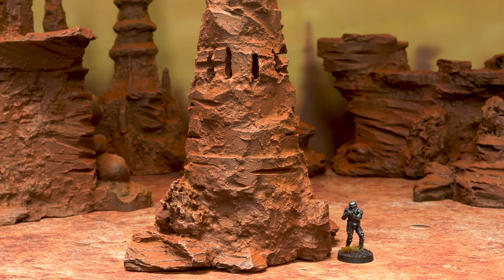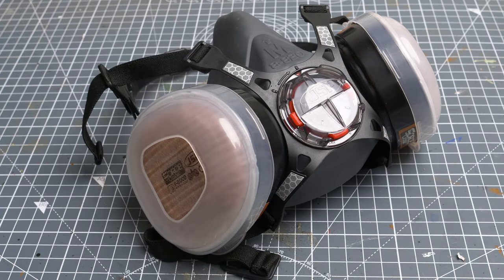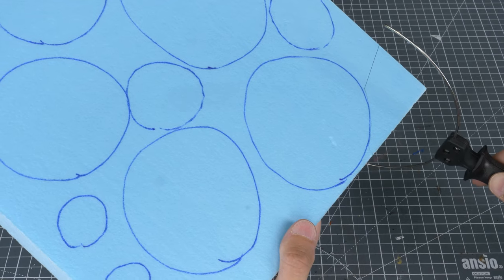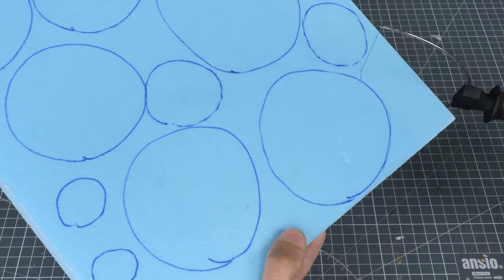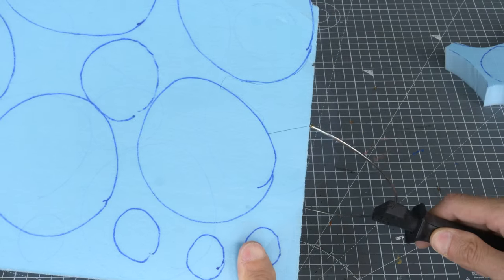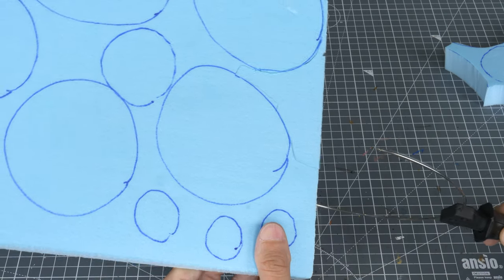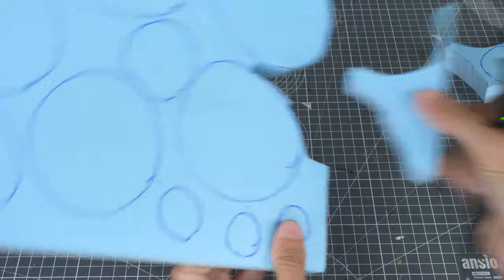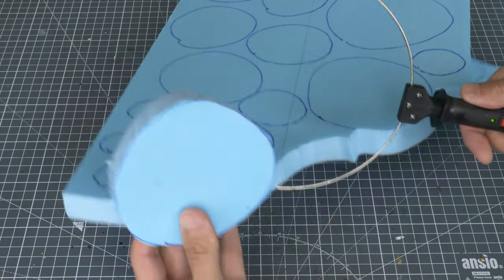When cutting the foam, it's important to work in a well-ventilated environment, and I'd strongly suggest wearing a breathing mask. I'm now cutting the circles out with a hot wire cutter, and I'm naturally taking care not to injure myself as I go. The cutting doesn't have to be especially neat, partly because I'm aiming for a somewhat uneven and textured look, but also because we can do some more refining of the finished shapes in a moment.